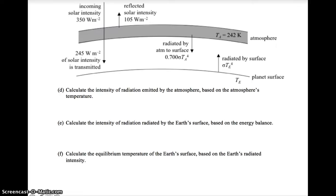On to part D. Calculate the intensity of radiation emitted by the atmosphere based on the atmosphere's temperature. The equation is this. In this equation, the intensity I is always the emitted intensity. So we plug in. The emissivity of the atmosphere is 0.7. Sigma is 5.678 times 10^-8. And the temperature is 242. So we calculate, and this is 136 watts per meter squared.